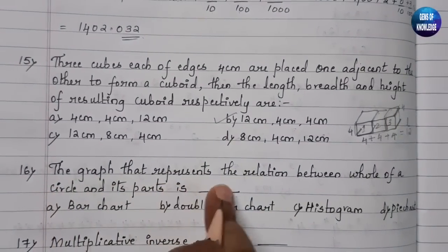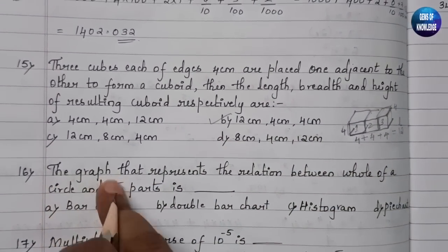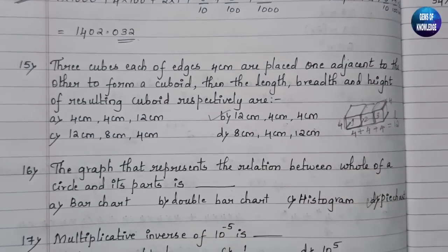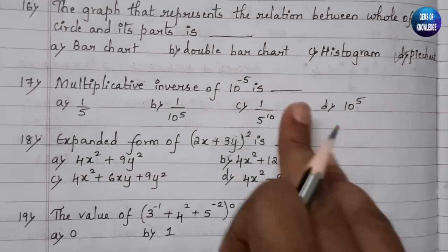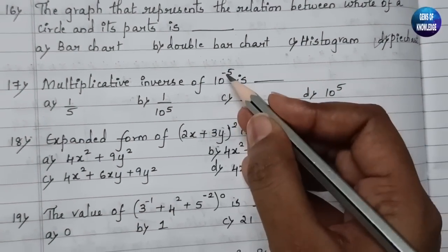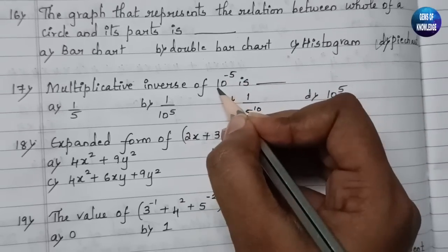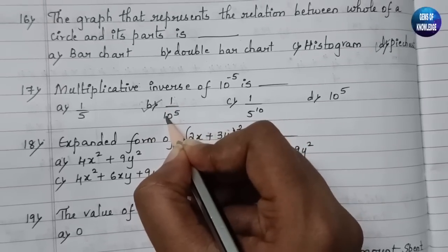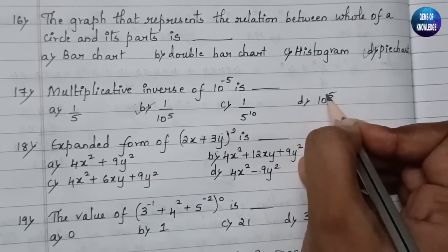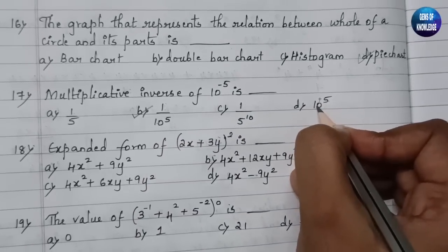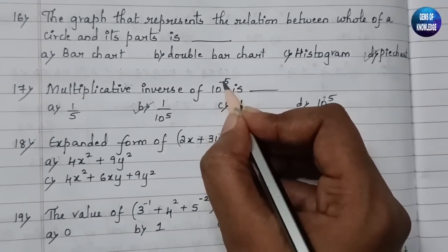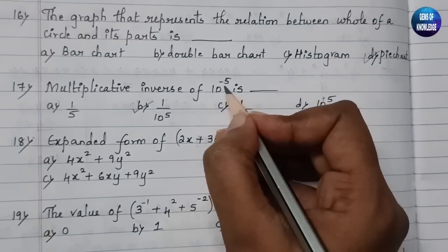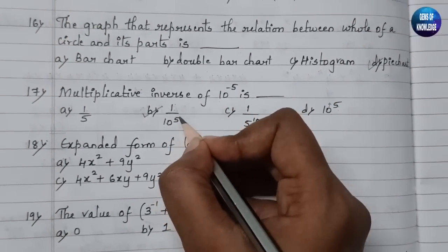The sixteenth question: the graph that represents the relation between the whole of a circle and its parts is the pie chart. The seventeenth question: the multiplicative inverse of 10⁻⁵ is 1/10⁵, while the additive inverse of 10⁻⁵ is 10⁵.